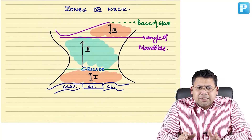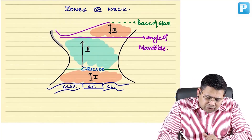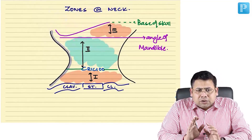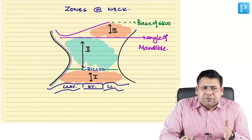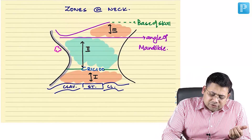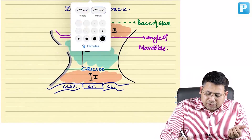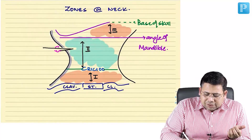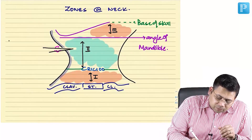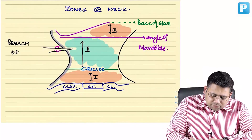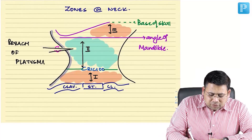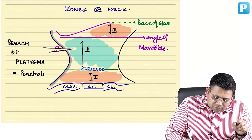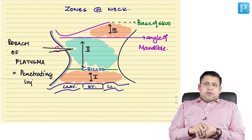In neck injury, you can have blunt injury or penetrating injury. By definition, a penetrating injury is one which penetrates through skin, subcutaneous tissue, and the platysma. Breach of platysma is therefore diagnostic of penetrating injury.